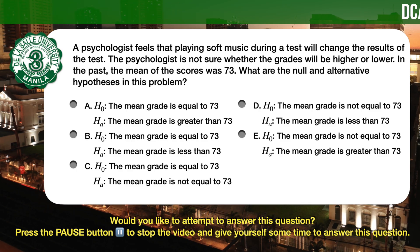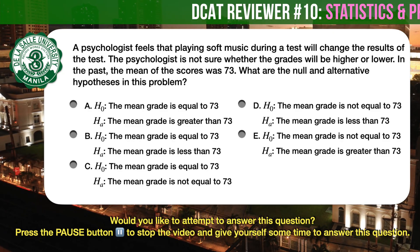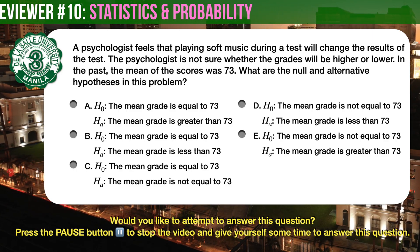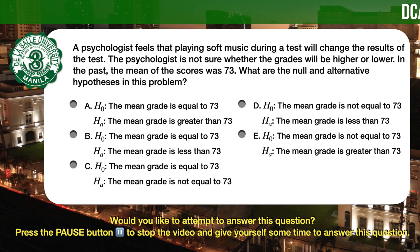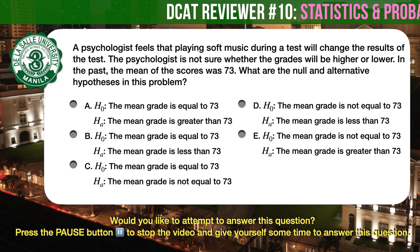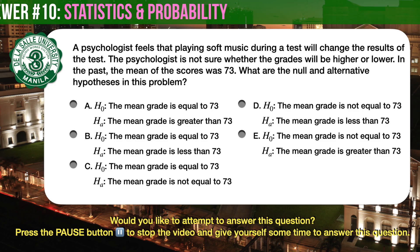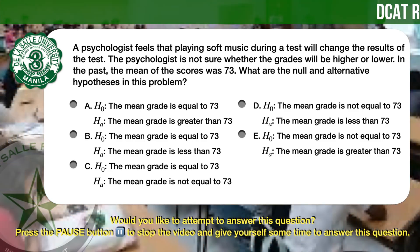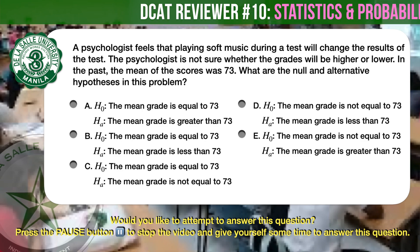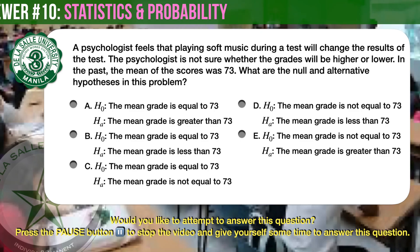Question number 3 — interpreting data. A psychologist feels that playing soft music during a test will change the results of the test. The psychologist is not sure whether the grades will be higher or lower. In the past, the mean of the scores was 73. What are the null and alternative hypotheses? A: H0: mean = 73; H1: mean > 73. B: H0: mean = 73; H1: mean < 73. C: H0: mean = 73; H1: mean ≠ 73. D: H0: mean ≠ 73; H1: mean < 73. E: H0: mean ≠ 73; H1: mean > 73.